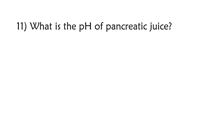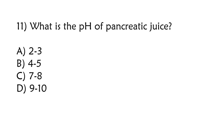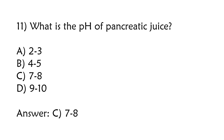What is the pH of pancreatic juice? 2 to 3, 4 to 5, 7 to 8, 9 to 10. The correct answer is Option C: 7 to 8.